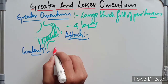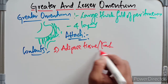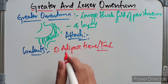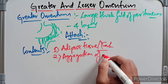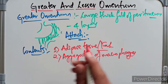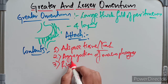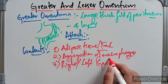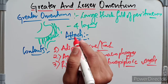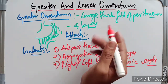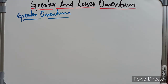The contents of the greater omentum include: number one, adipose tissue — it contains a variable amount of fat depending on the nutritional status of an individual. It also contains aggregations of macrophages which form dense patches on the greater omentum, also called milky spots. We also have the right and left gastroepiploic vessels, which run between the anterior and posterior layers of the greater omentum, close to the greater curvature of the stomach.